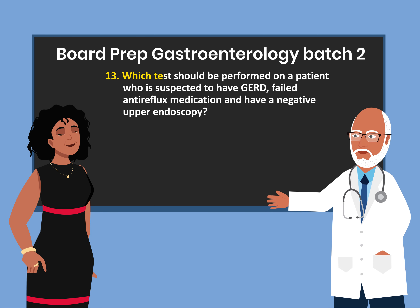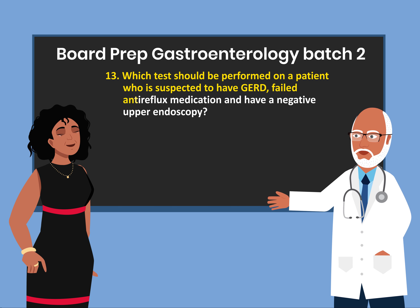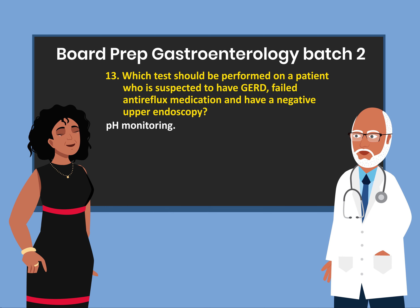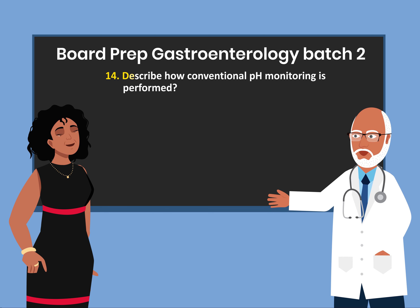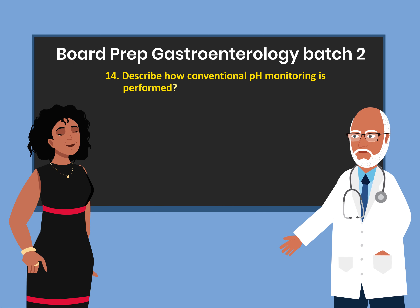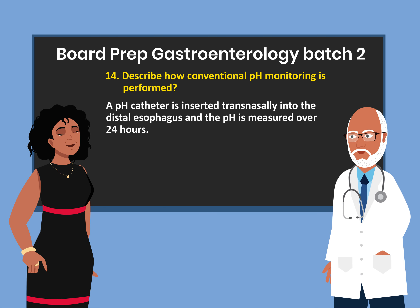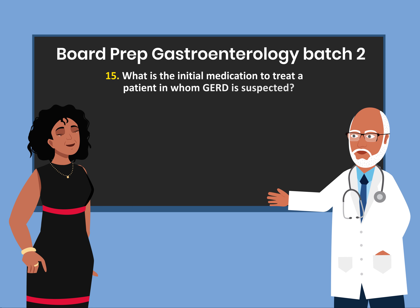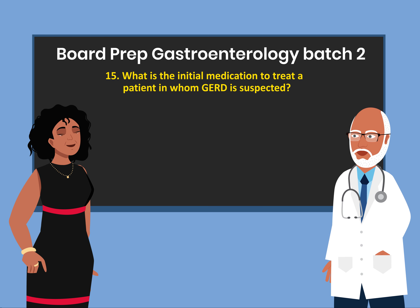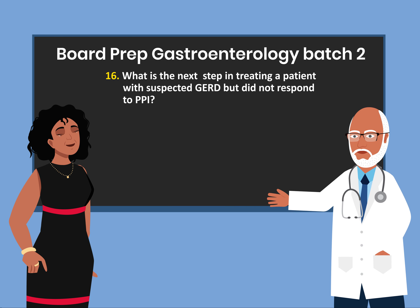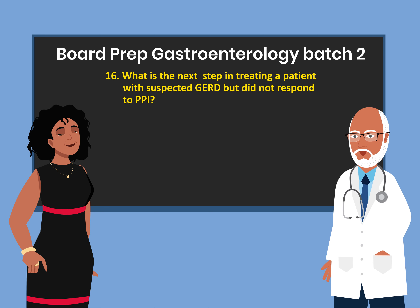Question 13: Which tests would be performed on a patient who is suspected to have GERD, failed anti-reflux medication, and has a negative endoscopy? pH monitoring. Question 14: Describe how conventional pH monitoring is performed. A pH catheter is inserted transnasally into the distal esophagus and the pH is measured over 24 hours. Question 15: What is the initial medication to treat a patient in whom GERD is suspected? Proton pump inhibitors. Question 16: What is the next step in treating a patient with suspected GERD who did not respond to PPIs? Upper endoscopy.